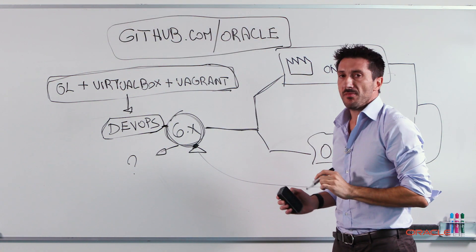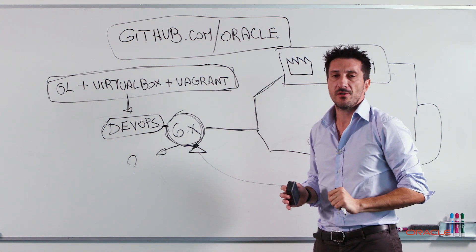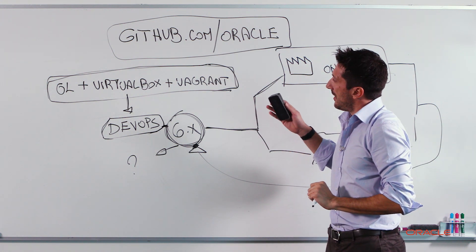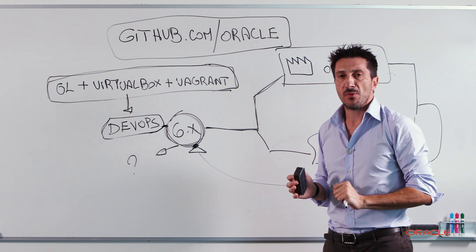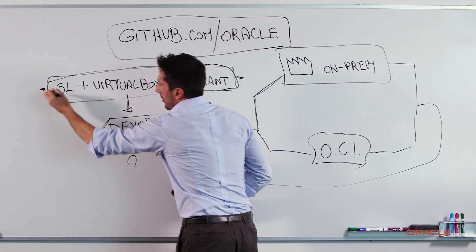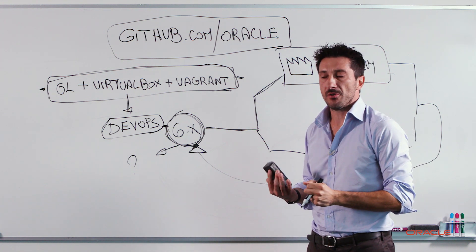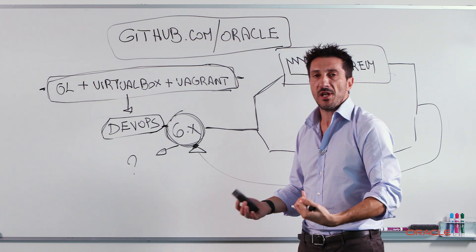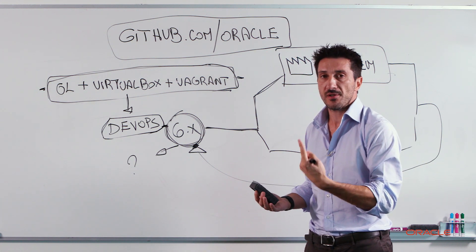So under the same GitHub slash Oracle, you can find two different projects dedicated to developers, or dedicated to this kind of automation. One of them is really focused on the Vagrant boxes with Oracle products on top. So again, by the same automation, I cannot only get the operating system up and running. I can also get my own application, or even, for example, the Oracle database, the Oracle application express up and running by executing one single command.